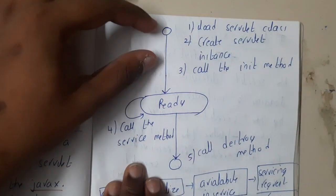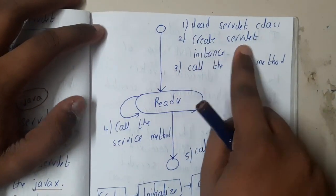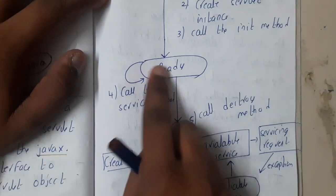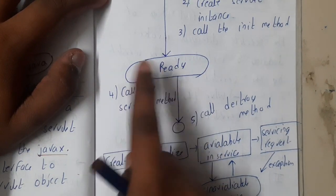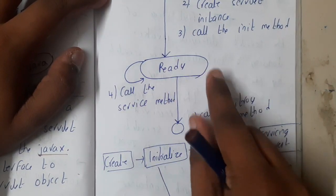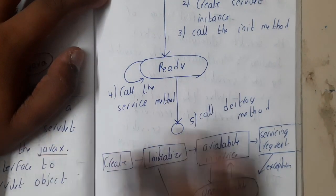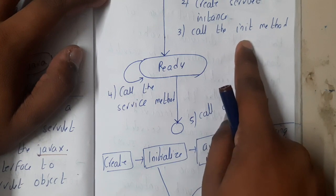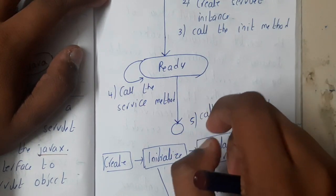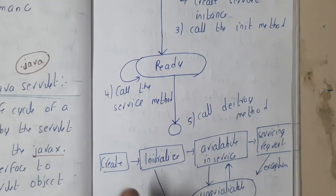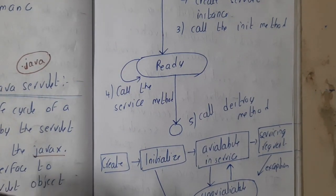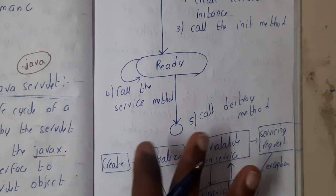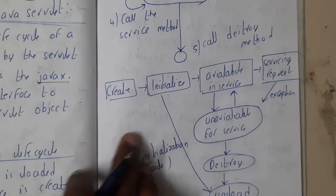A simple flowchart: the first step is loading the servlet, then creating it and calling the initialization method — now it is ready to use. Once it is ready, you can call the services and start your work. Once everything is done, you can directly destroy the servlet. Remember: if you create and initialize the servlet successfully once, you can use it until you destroy it — there is no time limit, until you turn off your system.